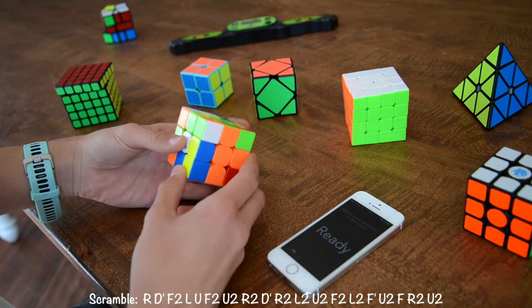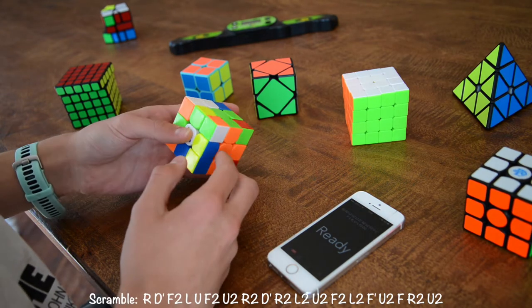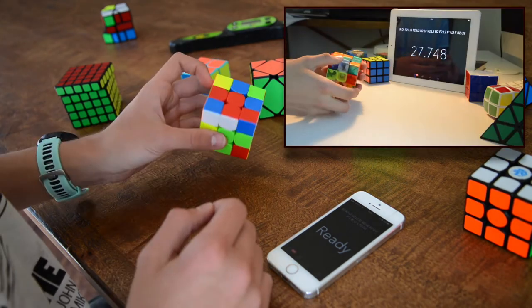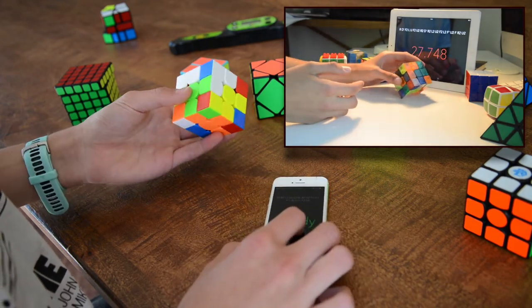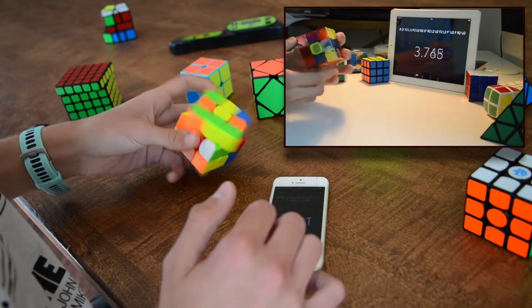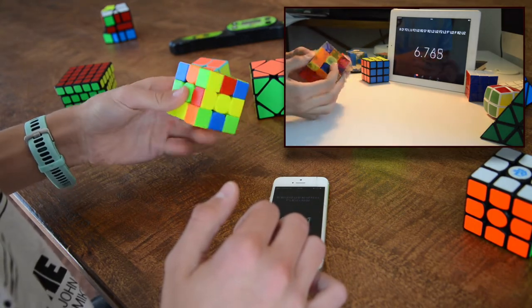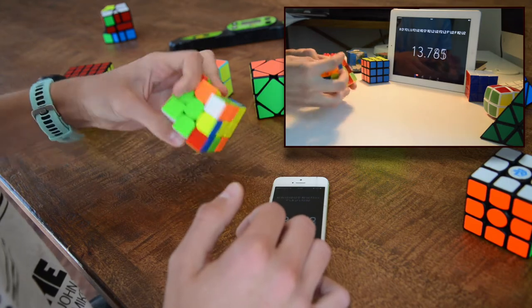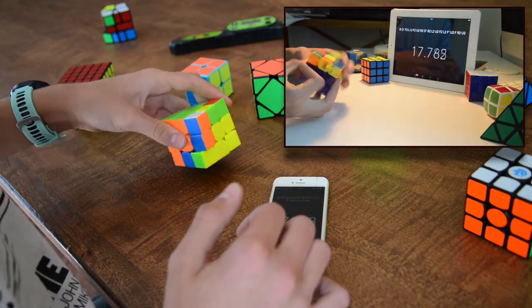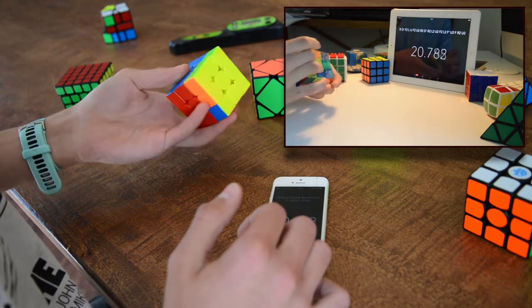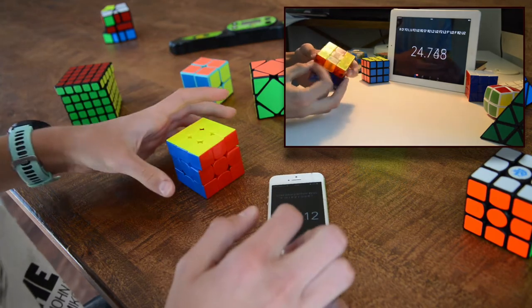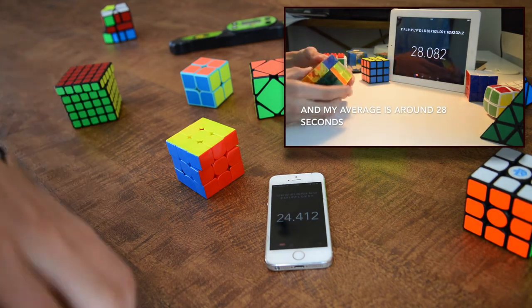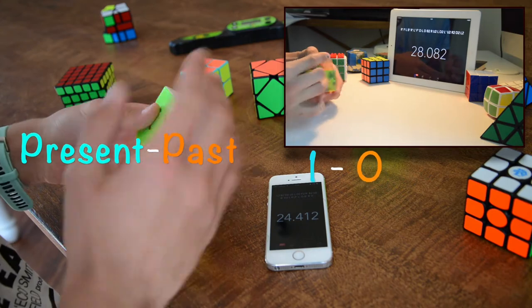So this should be the same exact scramble as in the first solve a year ago. Let's see if I can beat myself. Okay, so me in the past got a time of 28 seconds, so the first solve or the scramble, I won.